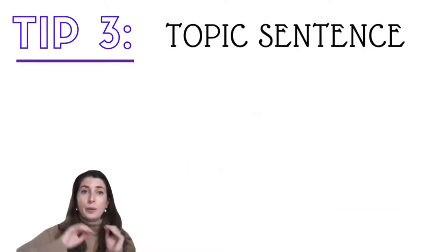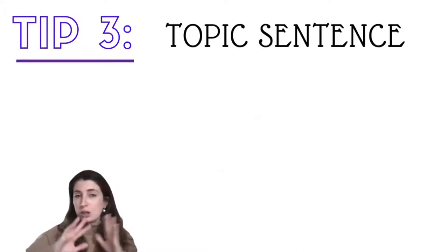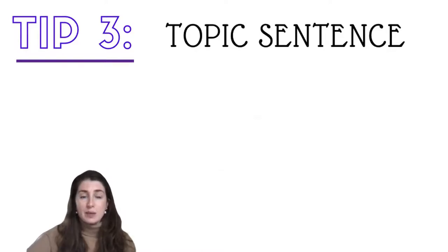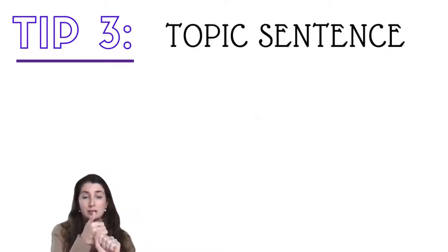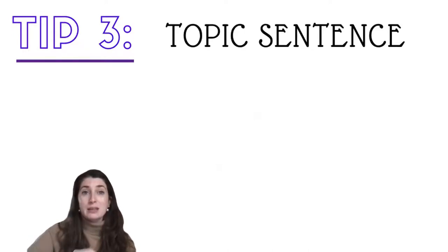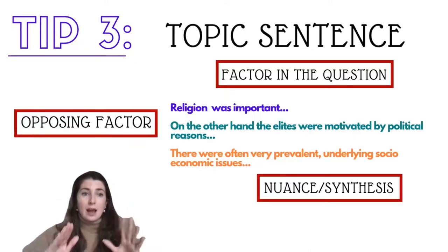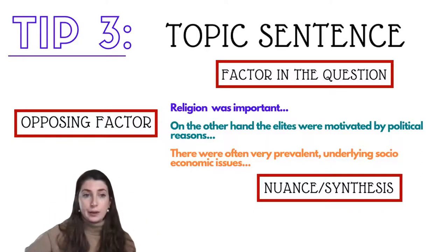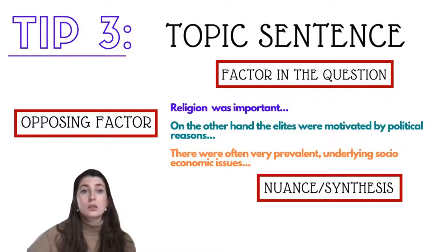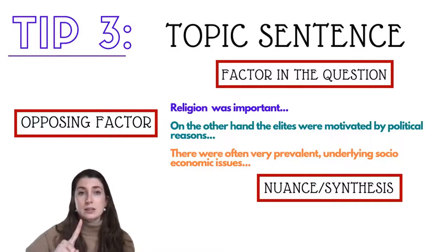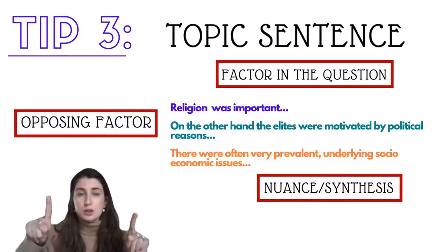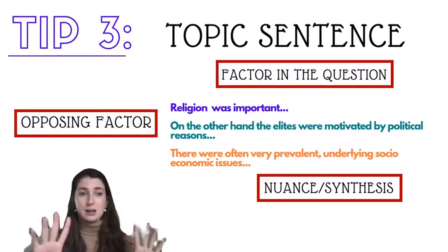Tip number three: topic sentences. For someone who has read so many A-level essays, this is one of the most important things for ensuring you're linking to the question, answering the question, and maintaining a clear journey. Tips one and two are cemented by getting this right. A topic sentence should in one sentence tell you what that entire paragraph is going to be about — it should leave nothing to chance. You read that topic sentence, and you should be able to tell another person exactly what's to come.